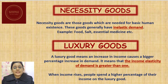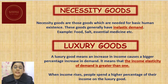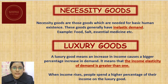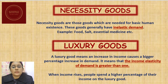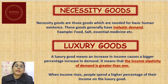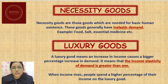Luxury goods means an increase in income causes a bigger percentage increase in demand, meaning the income elasticity of demand is greater than one. Luxury goods are demanded in a higher proportion when income increases. For example, if your income increases by 10 percent, the increase in demand for luxury goods could be 25 percent. This shows income elasticity greater than one — they have a highly elastic demand. When income rises, people spend a higher percentage of their income on luxury goods, so they have a positive relationship with income.